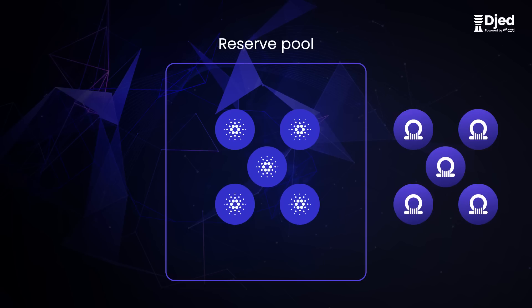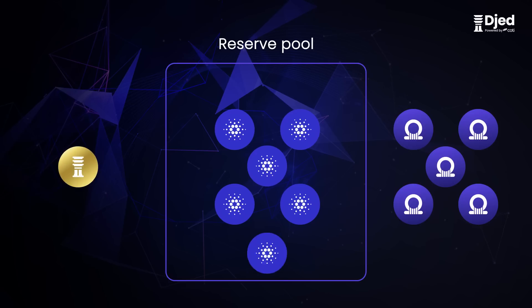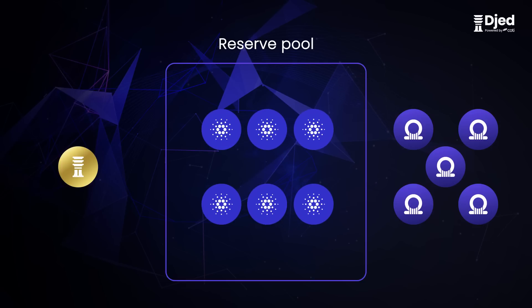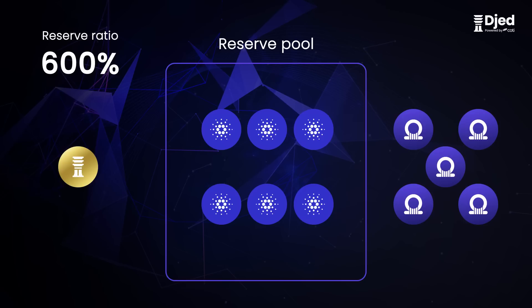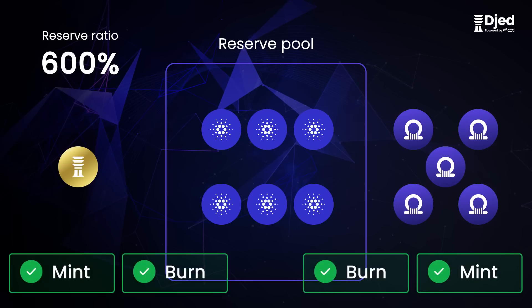David wants to mint 1 JED so he sends 1 ADA to the reserve pool. Now the reserve ratio is 1 to 6, or 600%, meaning that for every 1 JED minted, there are 6 ADA in the reserve pool and 5 minted SHAN. At this point, we can mint and burn JED and SHAN as long as we keep a healthy ratio.